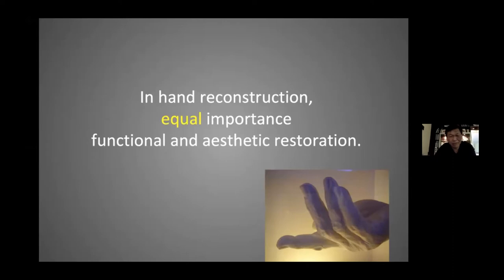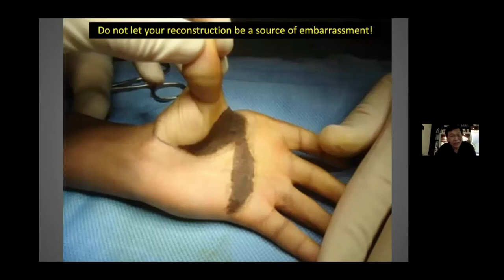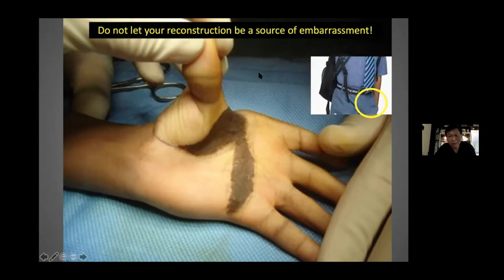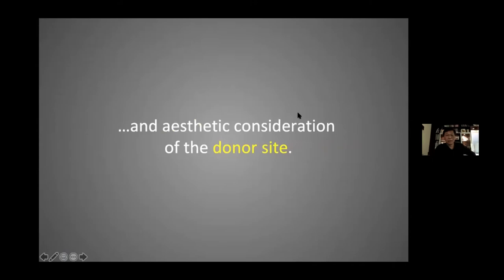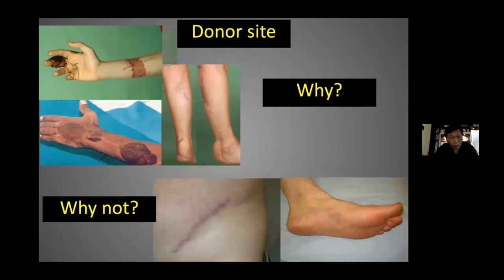The hand is such an important structure in our body and when we're reconstructing any part of it, it's very important to consider in equal measure both the functional and the aesthetic aspect. We must not let our reconstruction be the source of embarrassment, and when we're talking about reconstruction we need to consider both the recipient but also the donor side aesthetics. When considering the donor side, why would you want to place it somewhere very obvious and hard to hide when you can hide it somewhere easy?